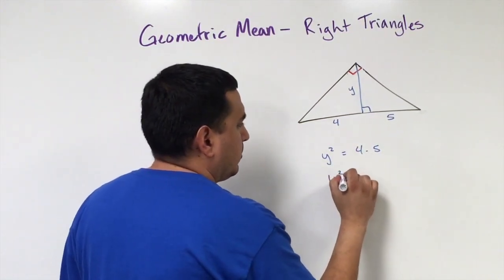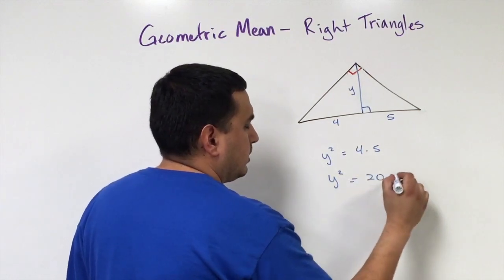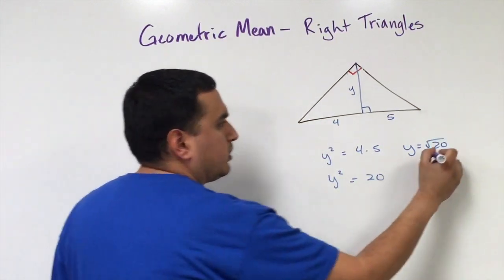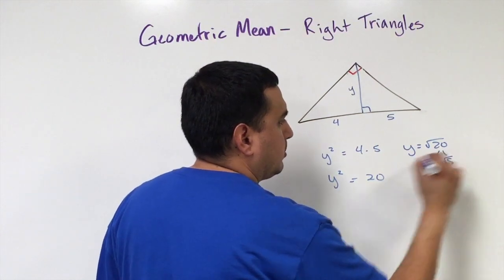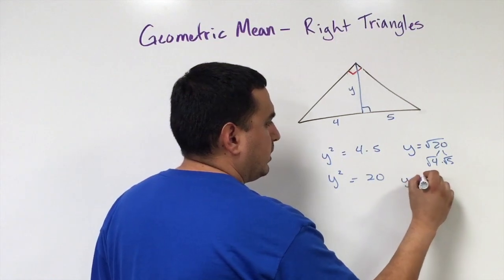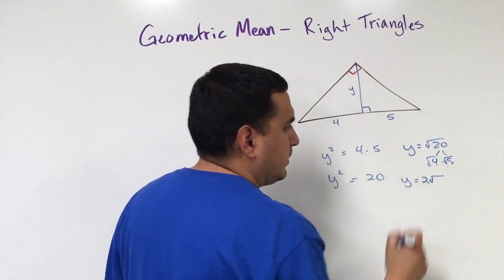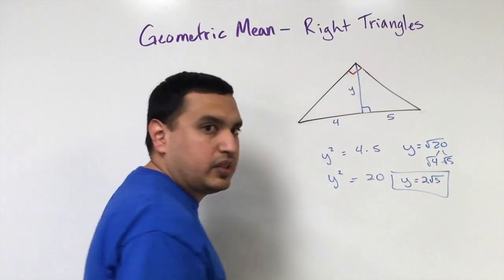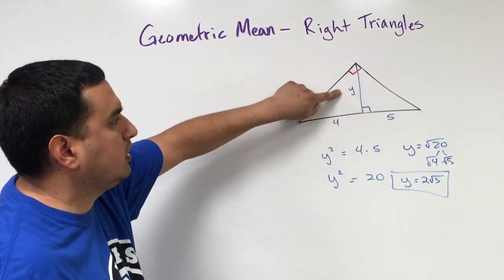So y squared equals 20, meaning y equals the square root of 20. Factoring that as the square root of 4 times 5 — since 4 is a perfect square, the square root of 4 is 2, and the 5 stays inside the radical — so y equals 2 square roots of 5. The height squared equals the product of the two smaller hypotenuse segments.